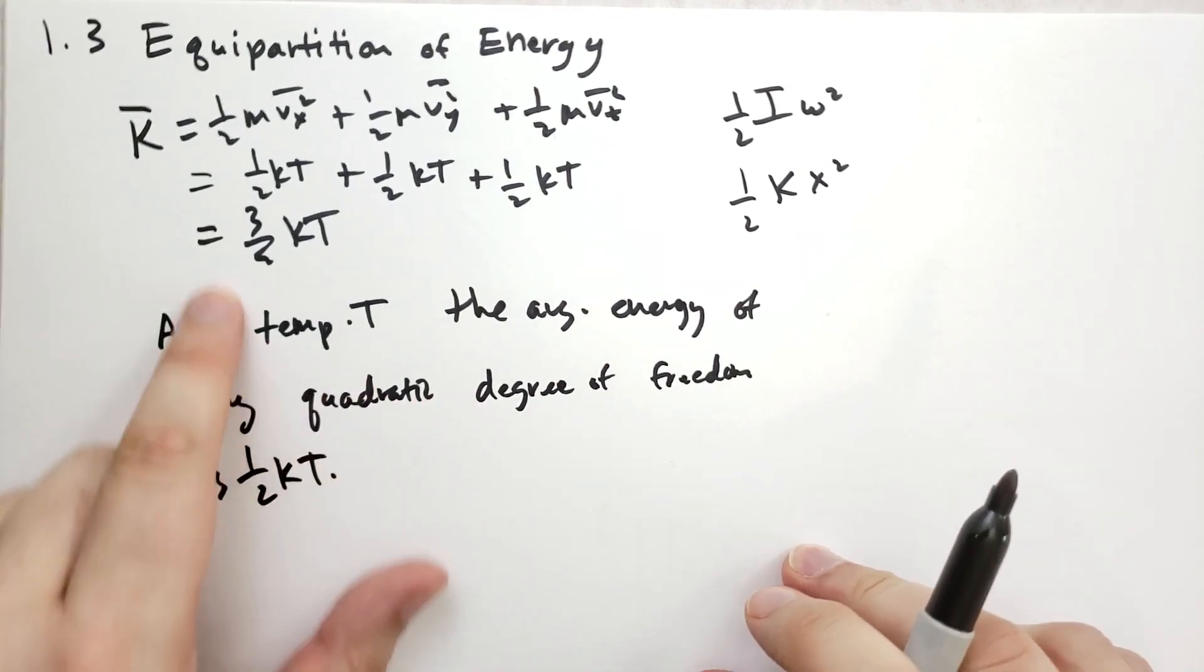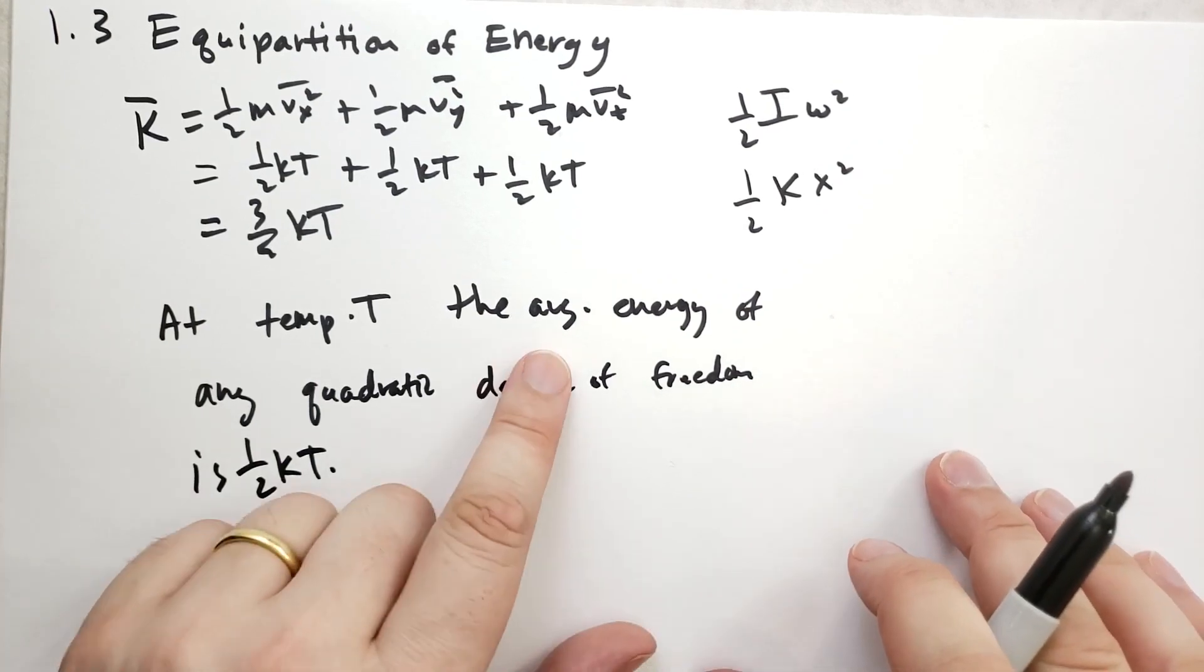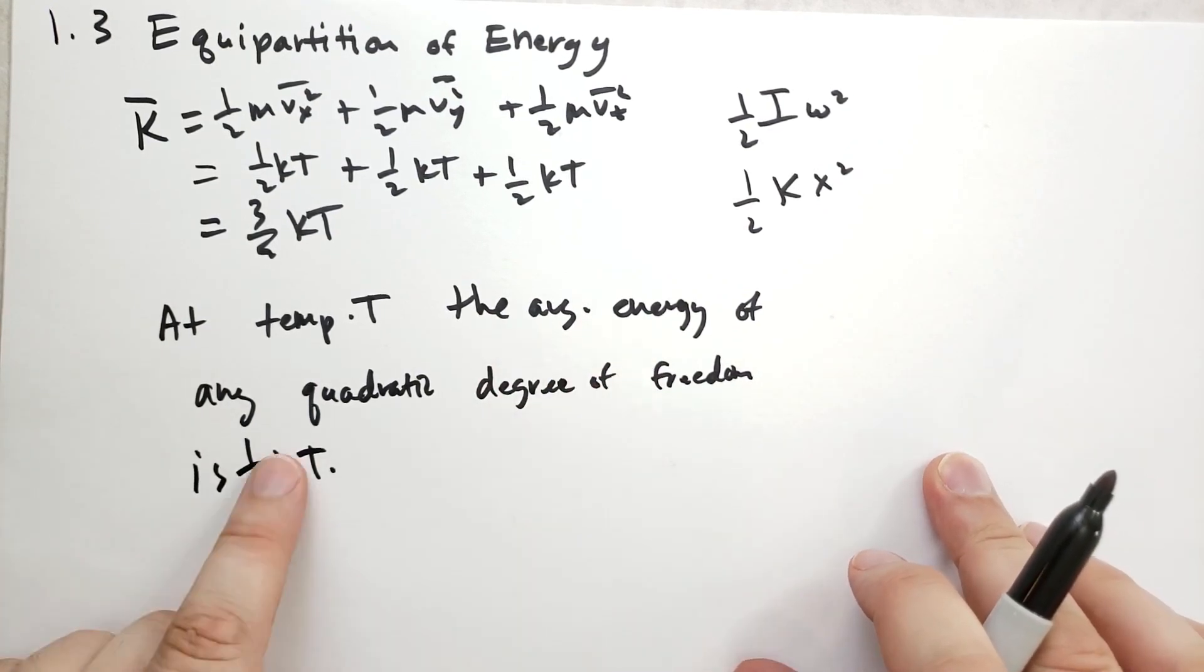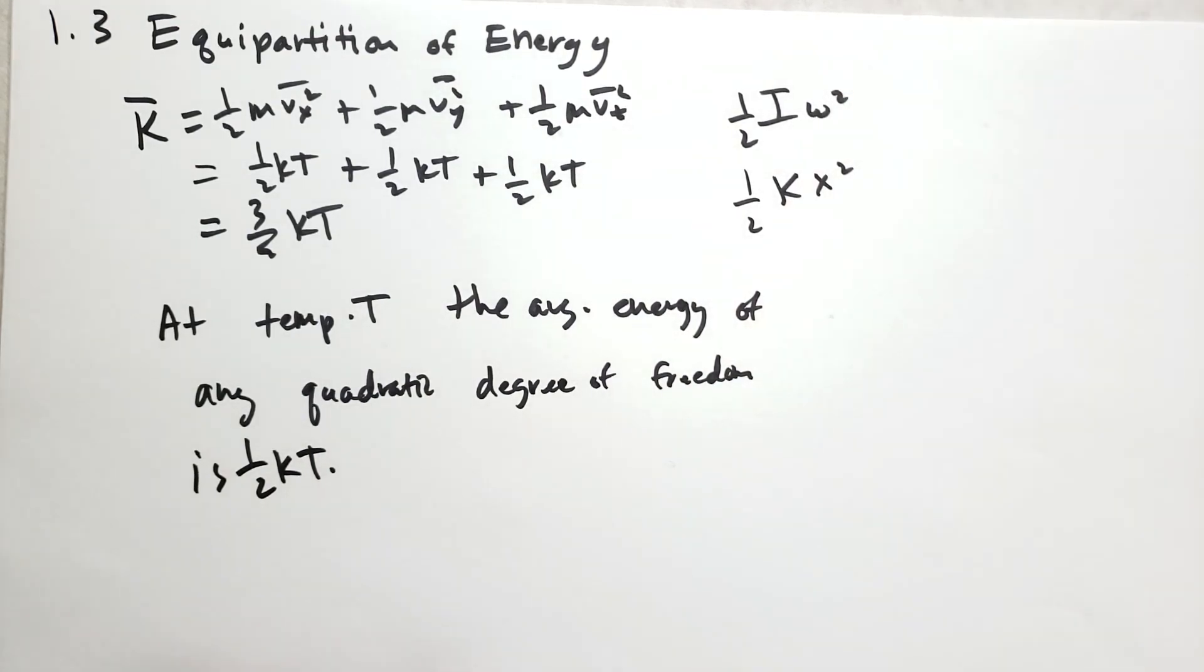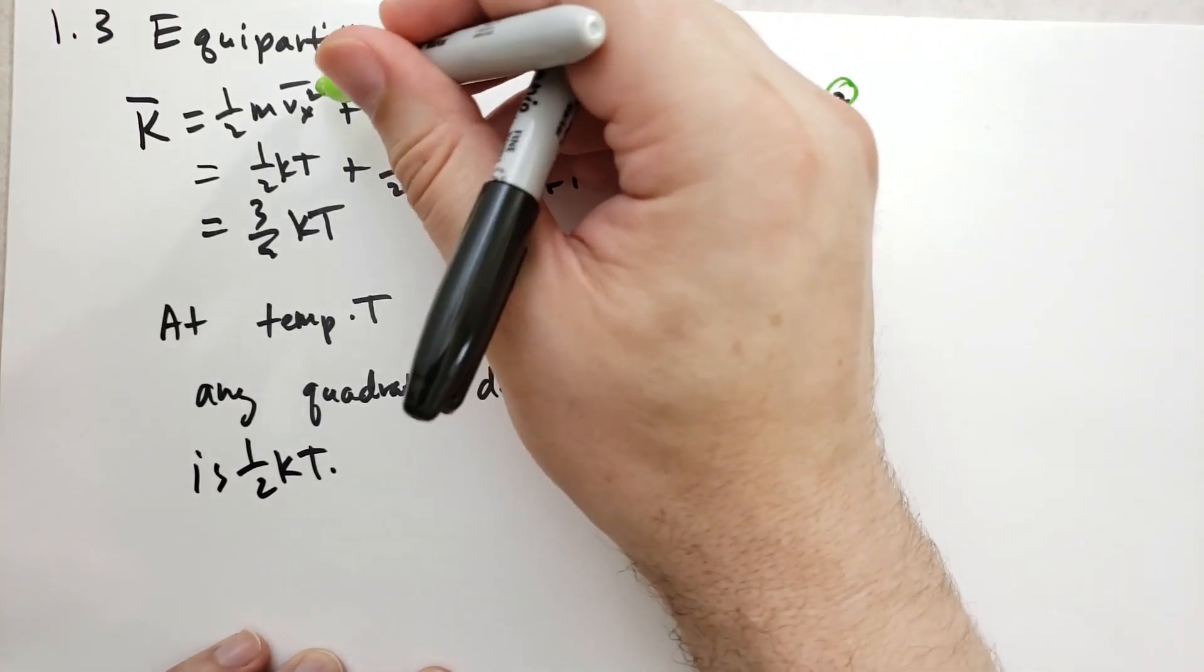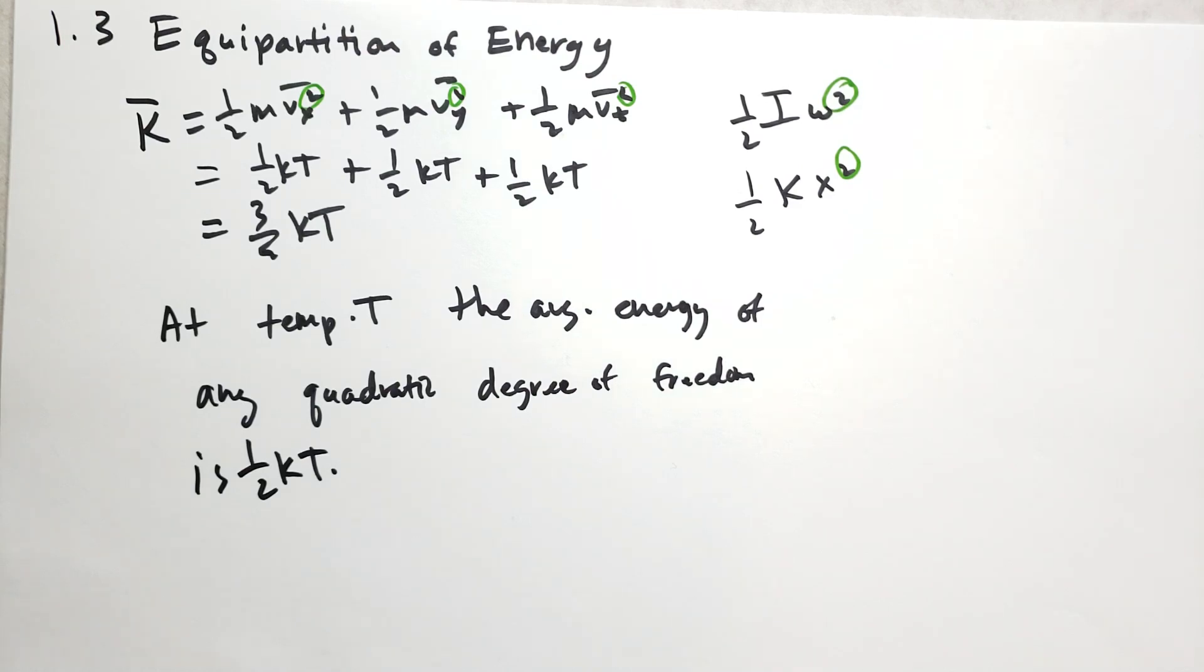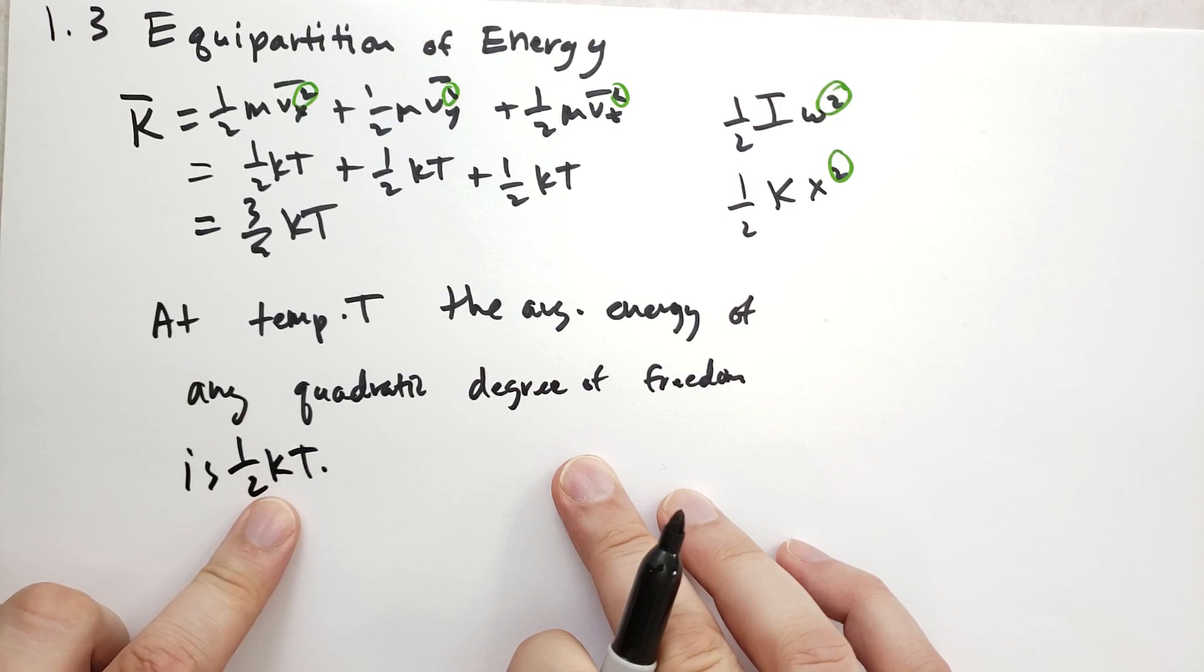Let's look a little bit at what that means. So we have temperature T of whatever it is. It could be a gas, it could be a liquid or whatnot. The average energy of any quadratic degree of freedom, so these are degrees of freedom that have a square here. So there's a square there and these guys have squares as well. So when there's a square on something, then it's going to have 1/2 kT.